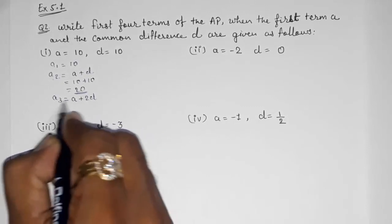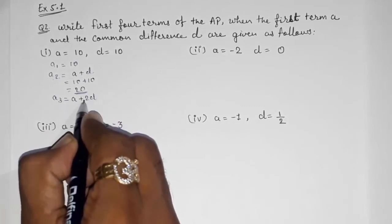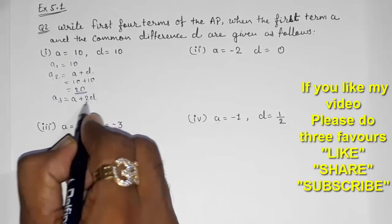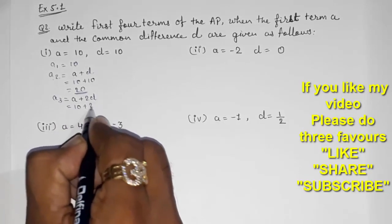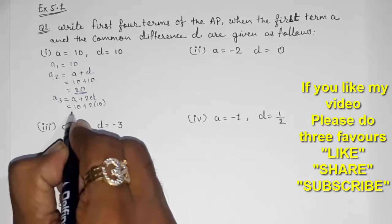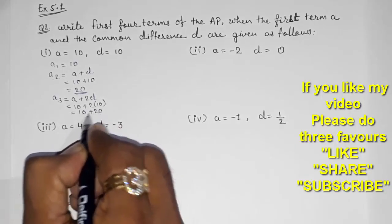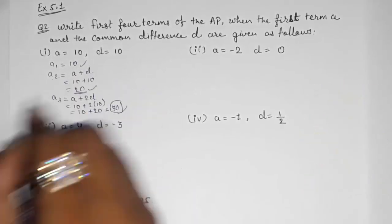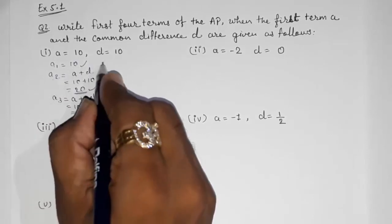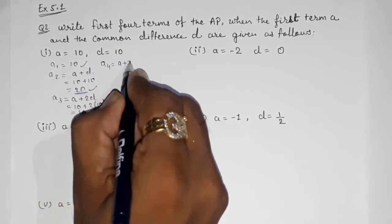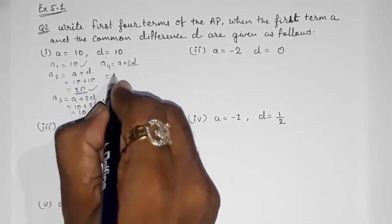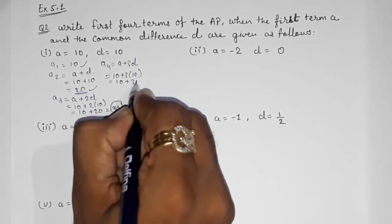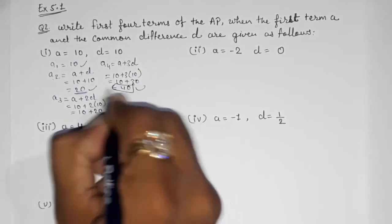The formula is an = a + (n-1)d. For a3, n minus 1 gives 2, so a3 = 10 + 2×10 = 10 + 20 = 30. This is our third term. For a4 = a + 3d = 10 + 3×10 = 10 + 30 = 40. This is our fourth term.